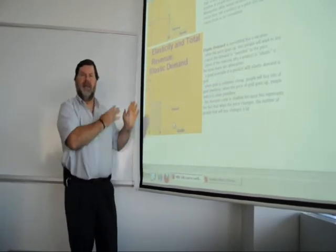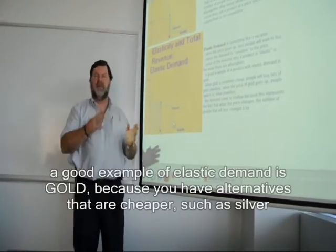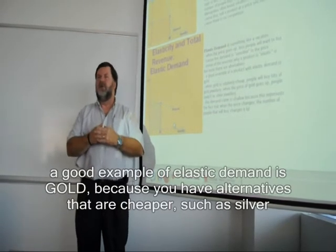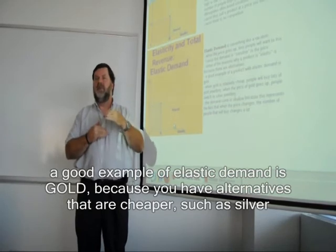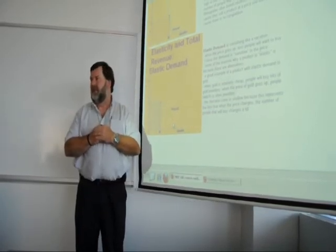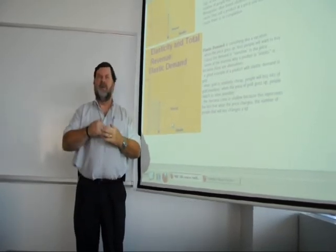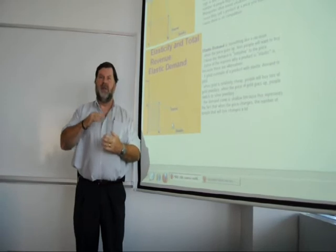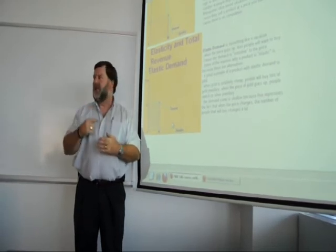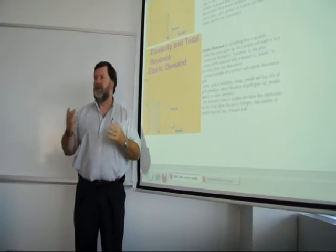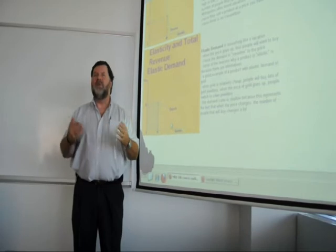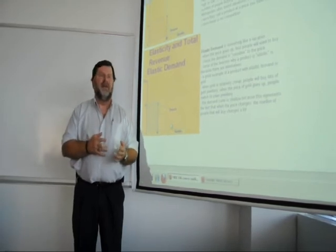A good example of elastic demand is gold. When the price of gold goes up, your girlfriend's getting silver for Christmas. When the price goes down, she's getting bracelets and earrings and a neck chain because you can afford it. Because it's one of those things you don't really need a lot of.